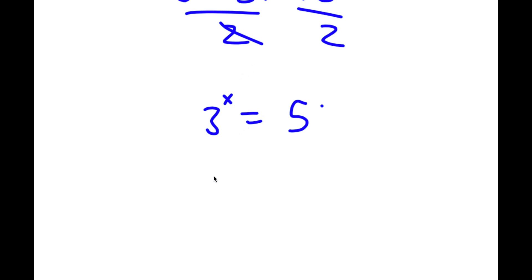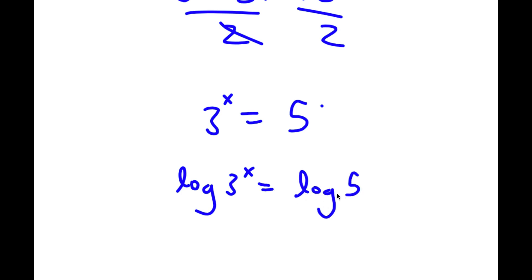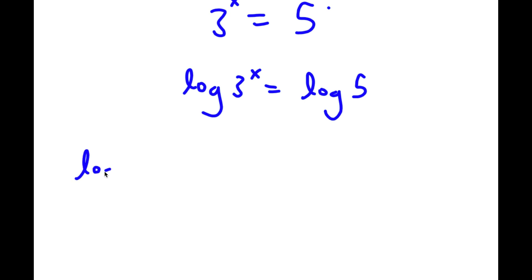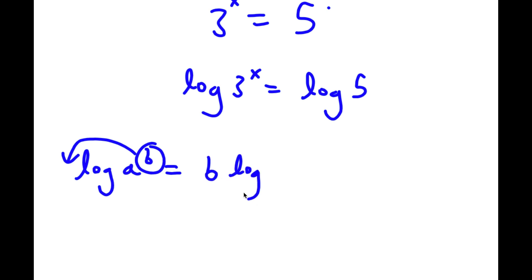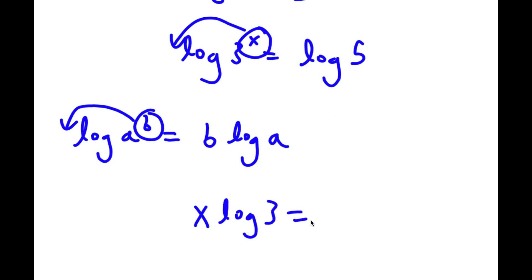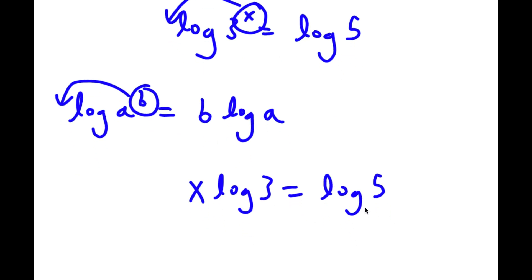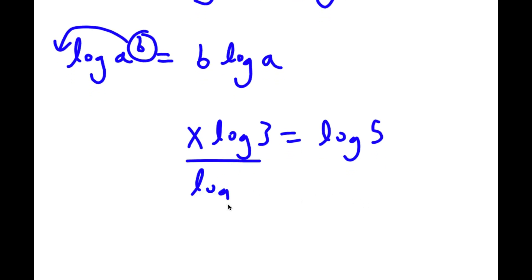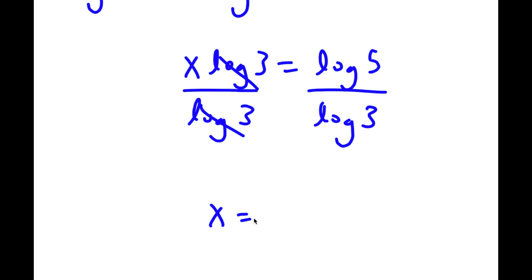To solve 3 to the power of x equals 5, I'm going to take the log on both sides. So I have log 3 to the power of x is equal to log 5. If I have something in the form log a to the power of b, I can move the exponent to the front, so this equals b times log a. So log 3 to the power of x becomes x times log 3, which equals log 5. Dividing both sides by log 3, I'm left with x equals log 5 over log 3.